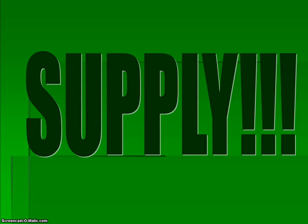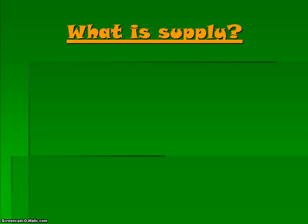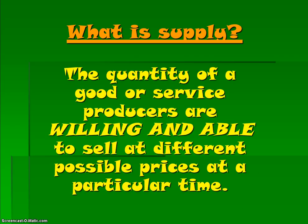In this lecture, we're going to talk about supply. As we talk about supply, we need to think about things from the producer's point of view rather than the consumer's point of view. Supply is the quantity of a good or service that producers are willing and able to sell at different possible prices at a particular time.